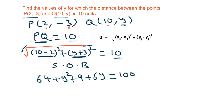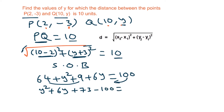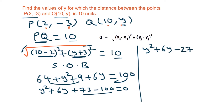We write y squared plus 6y, and add 64 plus 9 which is 73. Transposing 100 to the left gives y squared plus 6y plus 73 minus 100 = 0, so y squared plus 6y minus 27 = 0. This is a quadratic equation.